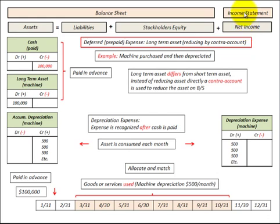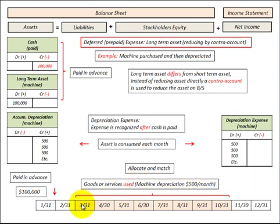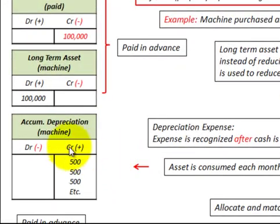We bought this machine and paid for it in advance, so as the months go on we have to allocate the wear or usage of the machine. In this case the machine depreciates at five hundred dollars a month. Looking at a sample timeline from March through October, we're allocating and expensing off five hundred dollars a month to the depreciation account.